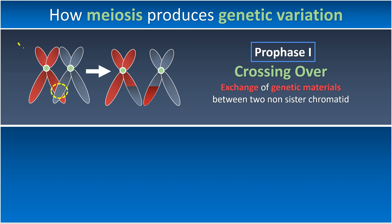As we can see here, one chromosome belongs to the father and one belongs to the mother. Whenever crossing over happens, the genetic material is exchanged between both the father and mother chromosomes. So the recombinants produced eventually cause genetic variations.